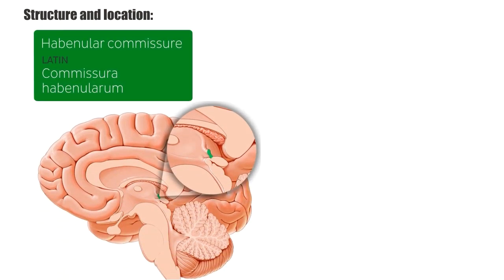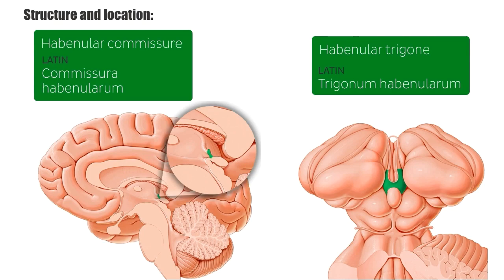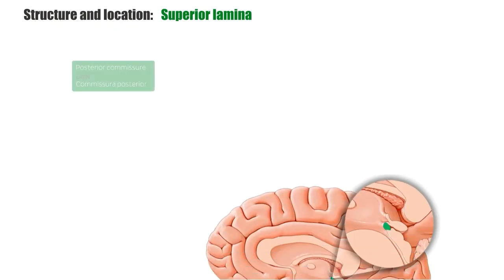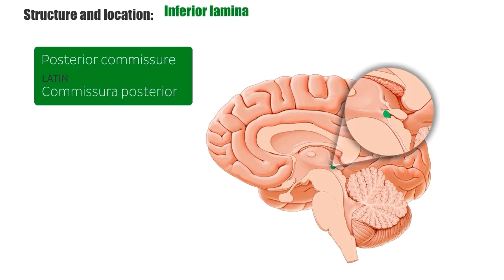The pineal stalk of the pineal gland has a superior lamina and an inferior lamina. Zooming in, we can see the habenular commissure and the habenular trigone, which are both part of the superior lamina, and both connect the pineal body to both cerebral hemispheres superiorly. The posterior commissure, which is part of the inferior lamina, connects the pineal body to both cerebral hemispheres inferiorly. Remember, lamina means plate — you can imagine these little sheets connecting the pineal gland to the cerebrum.